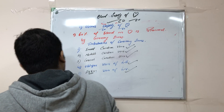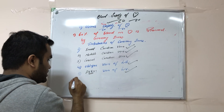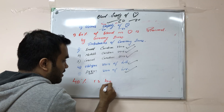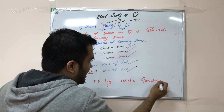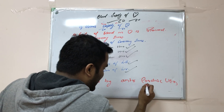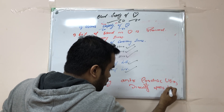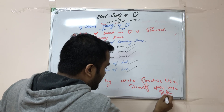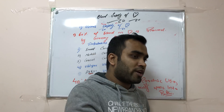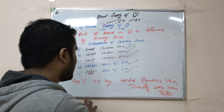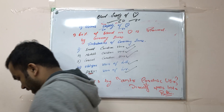The coronary sinus drains 60% of the blood. The remaining 40% is drained by the anterior cardiac vein, which directly opens into the right atrium. All other tributaries first open into the coronary sinus, which then drains into the right atrium — but the anterior cardiac vein bypasses the coronary sinus and opens directly into the right atrium. This is an important MCQ point.